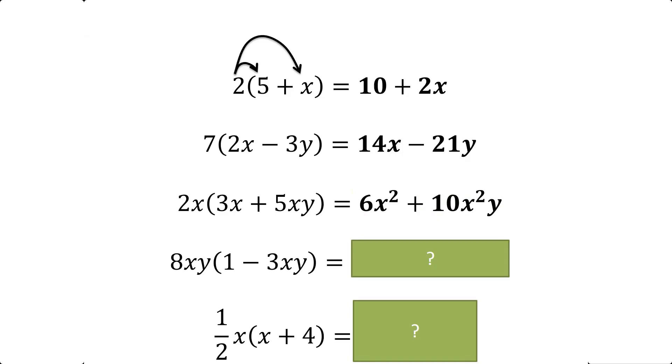The next one, the first one: 8xy minus... 24x²y². Excellent, 8xy minus 24x²y². And then the fifth one.